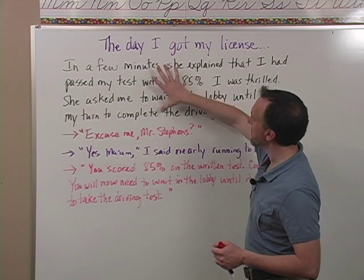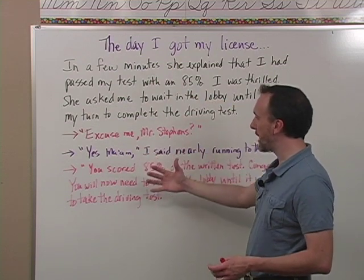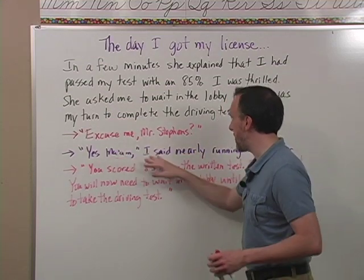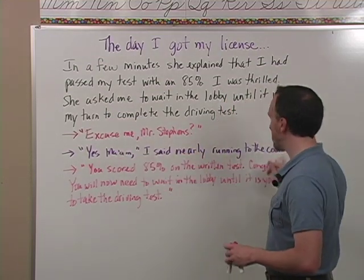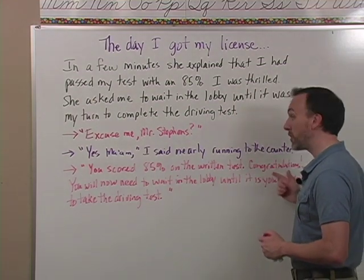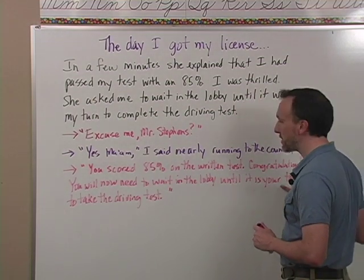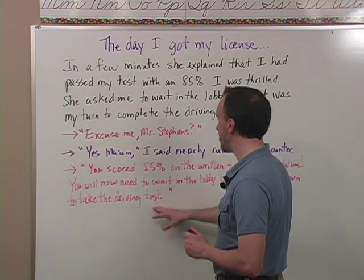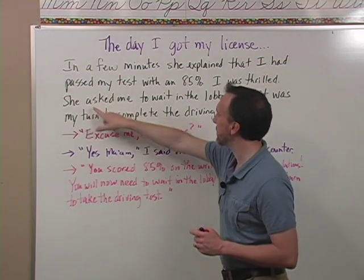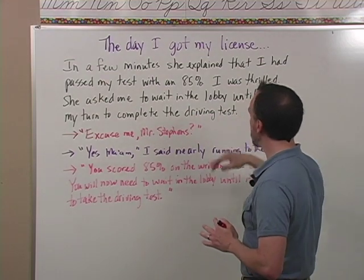All right, so now I've taken this information and put it into a little bit of dialogue to make it better. Reading it back: 'Excuse me, Mr. Stephens?' 'Yes, ma'am,' I said, nearly running to the counter. 'You scored an 85% on the written test. Congratulations. You will now need to wait in the lobby until it is your turn to take the driving test.' Let's see if there's anything else I want to change — 'She asked me to wait in the lobby until it was my turn to complete the driving test.' Nope, that's good.